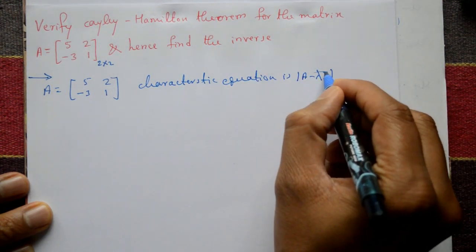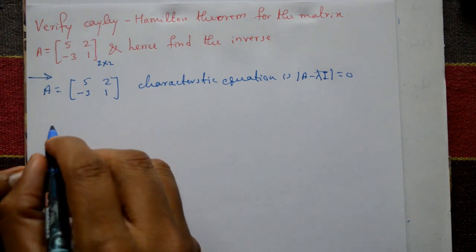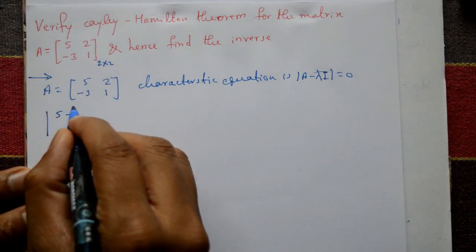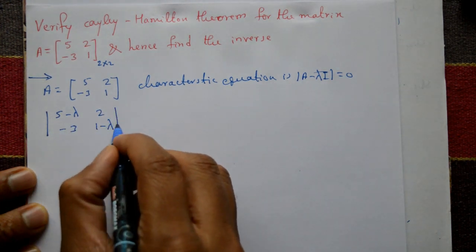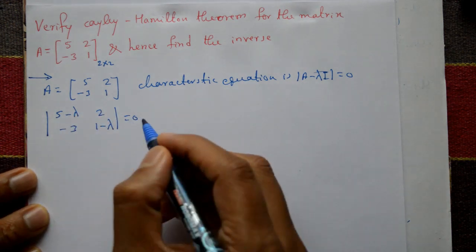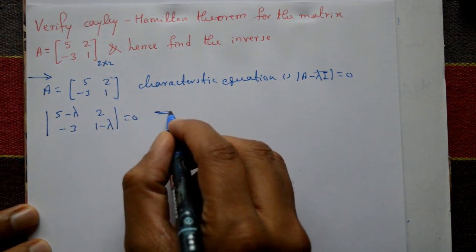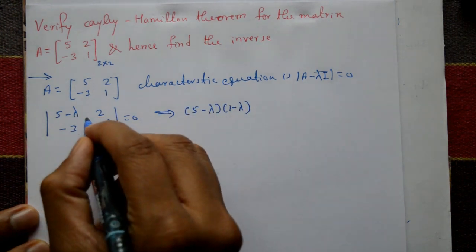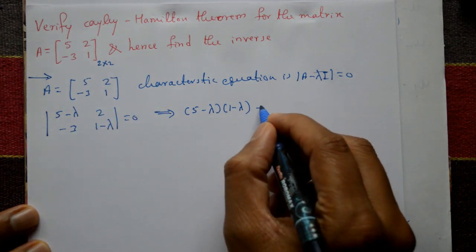The characteristic equation is det(A - λI) = 0. Subtracting λ diagonally, we get the determinant of [[5-λ, 2], [-3, 1-λ]] equal to 0, which means A - λI = 0.